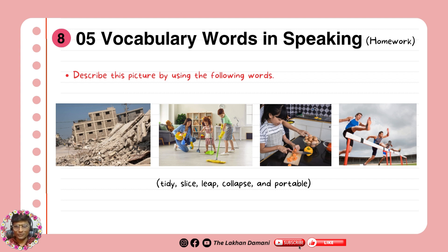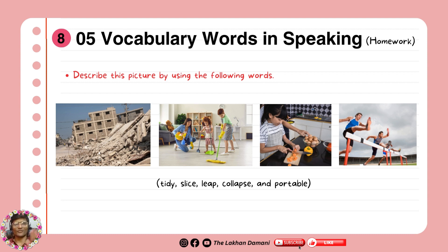Lastly, we have homework. You are going to describe pictures by using the following words we learned in the beginning: tidy, slice, leap, collapse, and portable. These pictures are completely connected to those words. You're going to create as many sentences as you can using each word with the pictures — it will be great for understanding these five words. That is all for today's lesson. Feel free to message me whenever you have questions. I would love to help you. Take care of yourself. Bye.